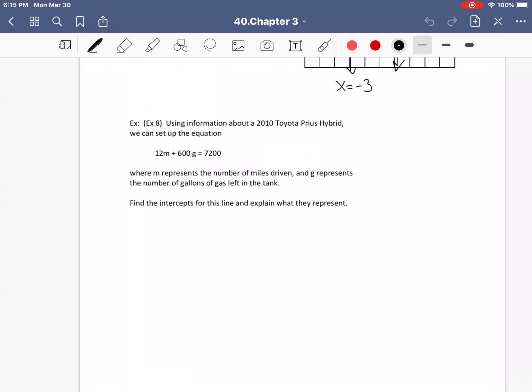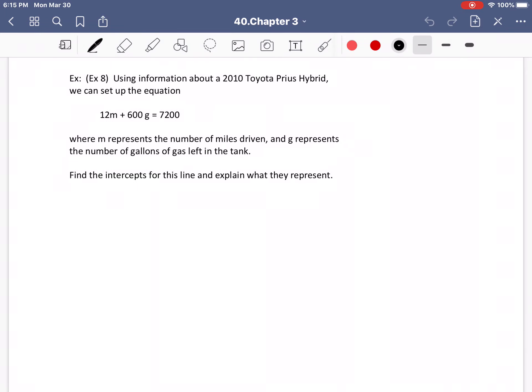The last problem in the lecture online is this problem, which was example number eight from the book. Using information about a 2010 Toyota Prius hybrid, we can set up this equation: 12m plus 600g equals 7200, where m represents the number of miles driven and g represents the number of gallons of gas left in the tank. Find the intercepts for this line and explain what they represent.